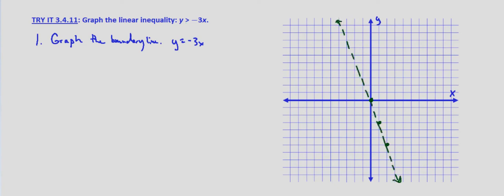And now we can't use 0, 0 as our point to check. So we'll use, let's say, negative 1, 0.